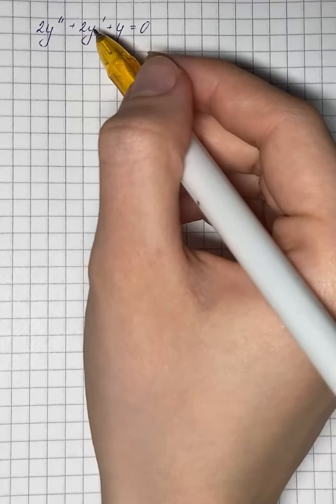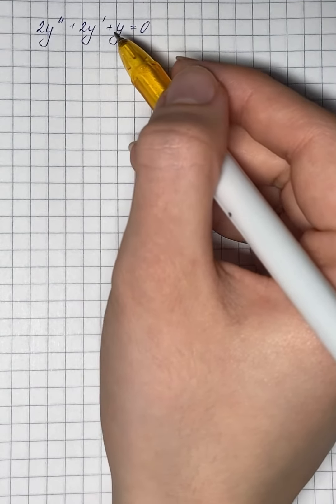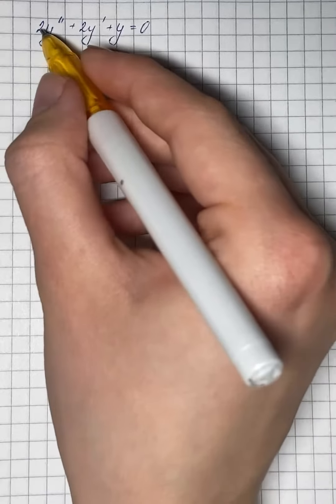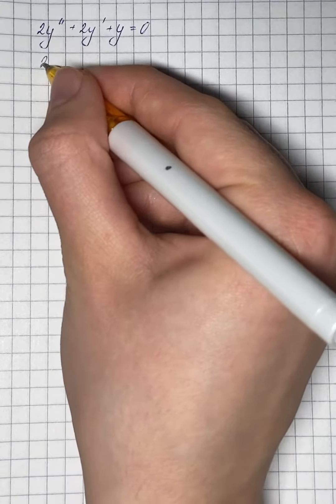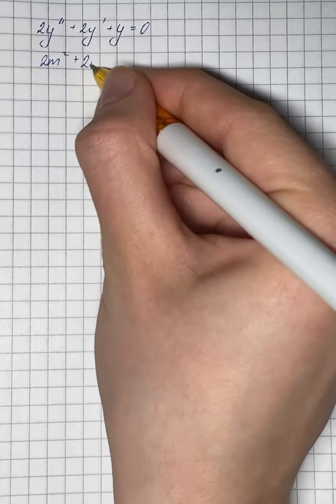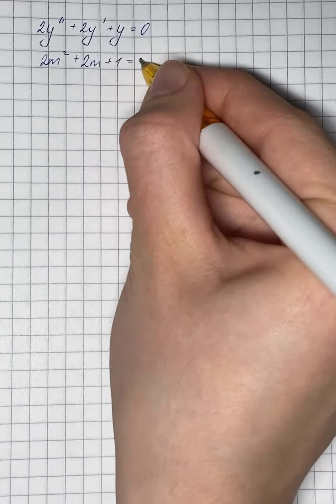The given equation is a second-order linear homogeneous differential equation. First, we're going to write an auxiliary equation for this equation, and that's going to be 2m squared plus 2m plus 1 equals 0.